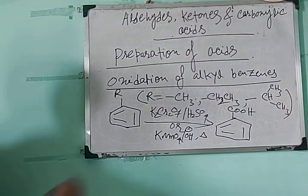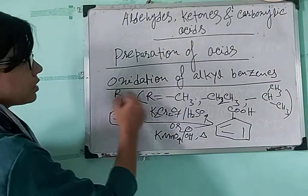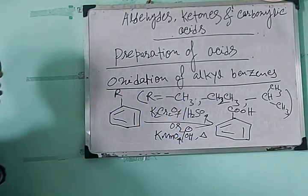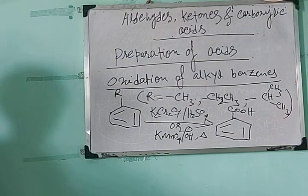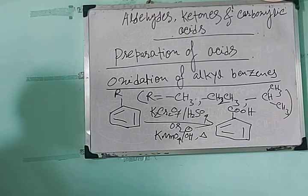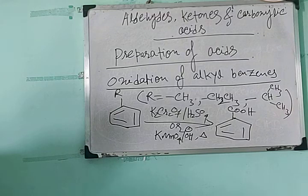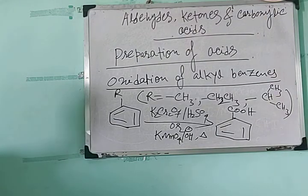When R is methyl its name is toluene, and when R is CH2CH3 its name is ethylbenzene, and isopropyl benzene. So whatever it is, if you oxidize it with a strong oxidizing agent it will be converted in one step to benzoic acid. This is due to the higher reactivity of benzylic hydrogens as compared to other hydrogens on the alkyl group — oxidation occurs at that carbon atom, and thus all alkyl benzenes give the same benzoic acid.